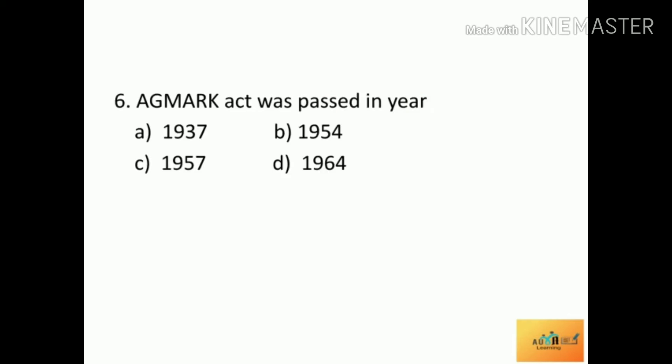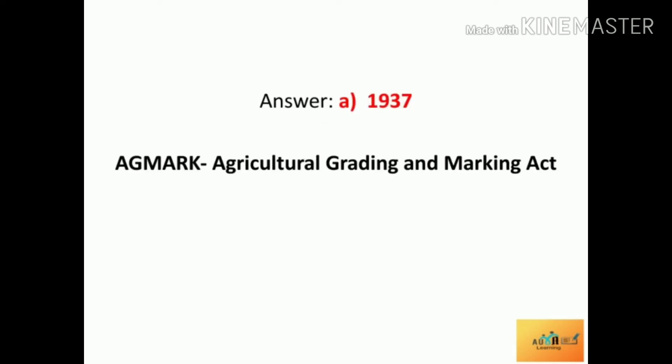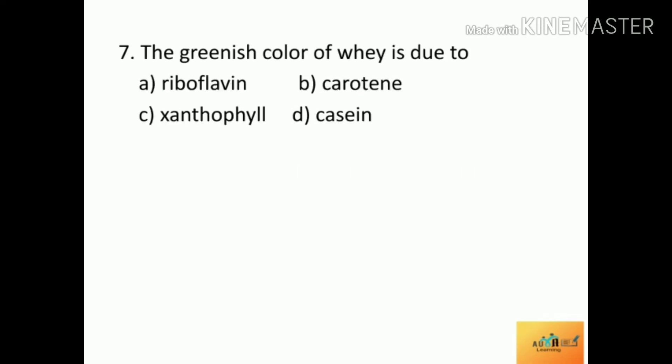Sixth question: The PFA Act was passed in year — Option A: 1937, Option B: 1954, Option C: 1957, Option D: 1964. Next question: The greenish color of whey is due to — Option A: riboflavin, Option B: carotene, Option C: xanthophyll, Option D: casein.